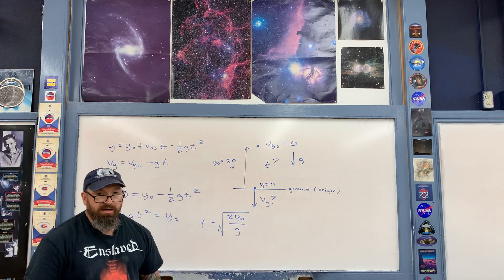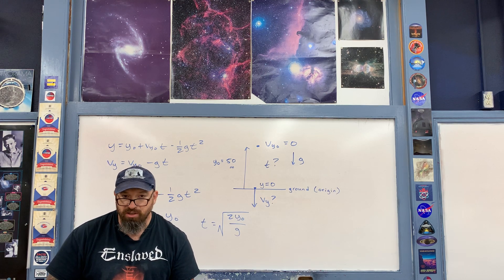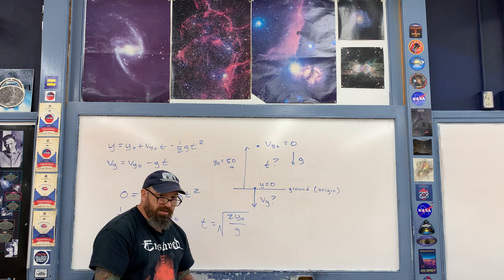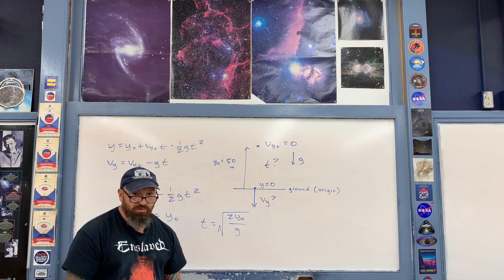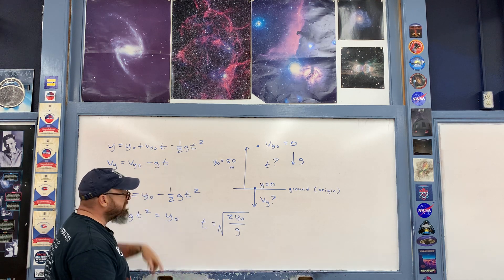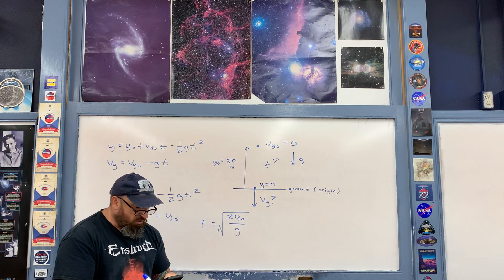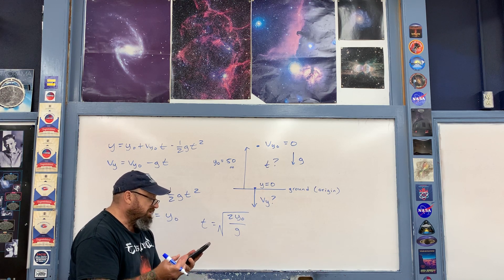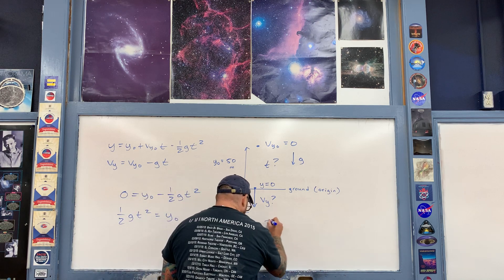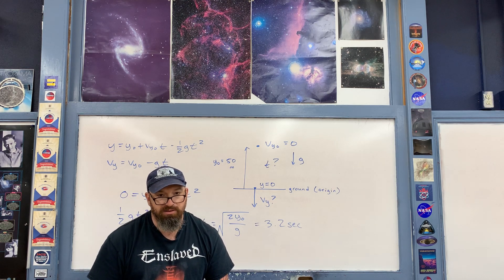When taking the square root, technically there is a plus or minus, but we use only the positive value because we're talking about time. Plugging in for g, I use positive 9.8 meters per second squared — the negative sign for downwards is already taken care of in the equations, so you plug in the magnitude. So we have the square root of 2 times 50 divided by 9.8, which ends up being about 3.2 seconds. It takes 3.2 seconds for the object to fall down to the ground.